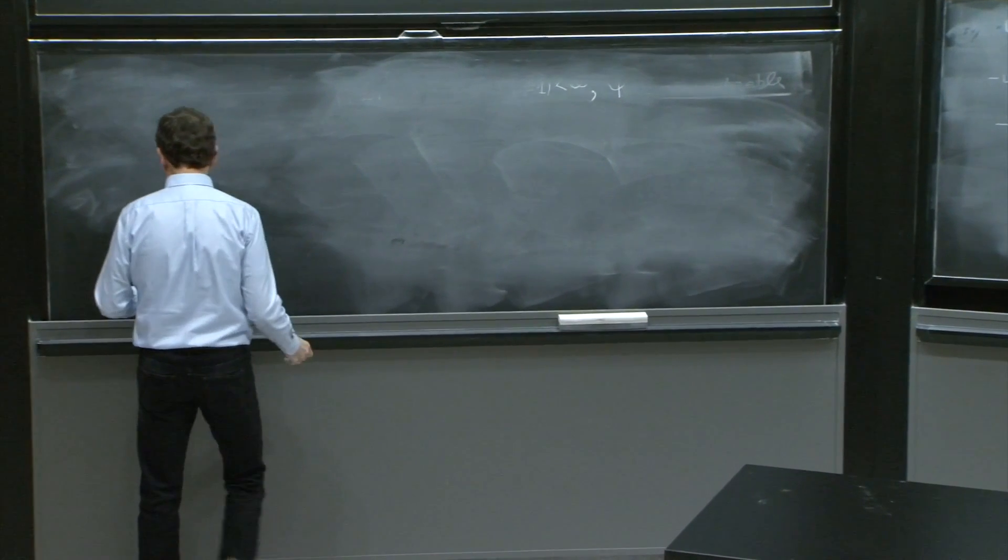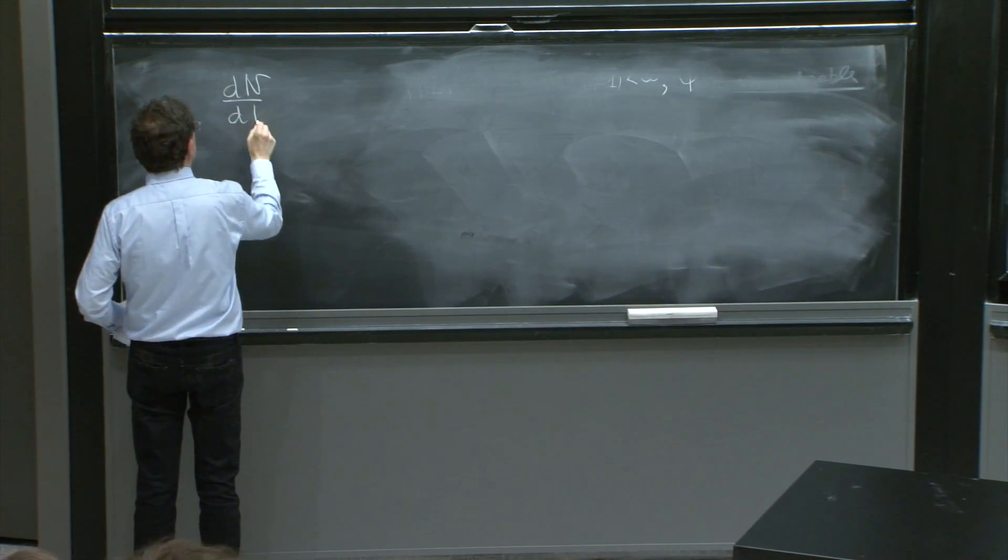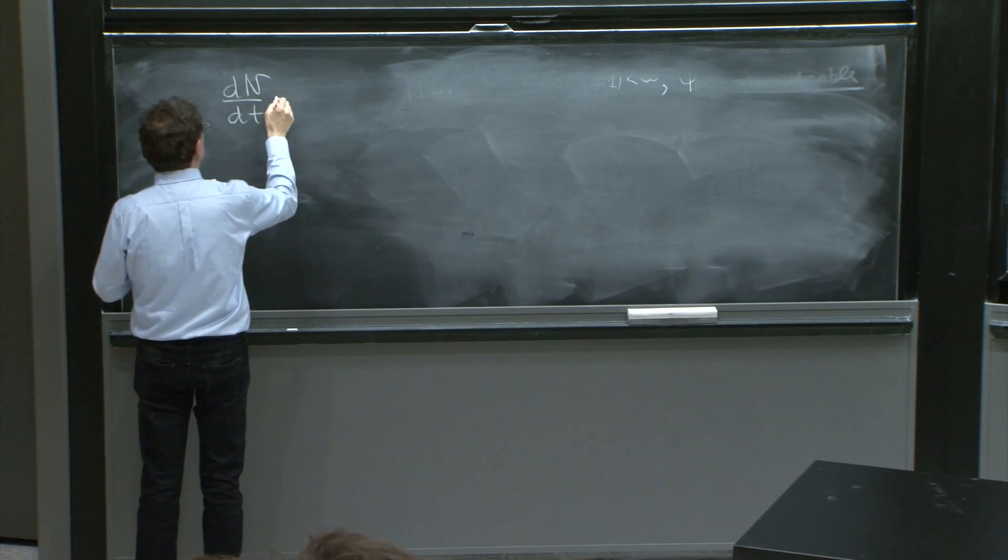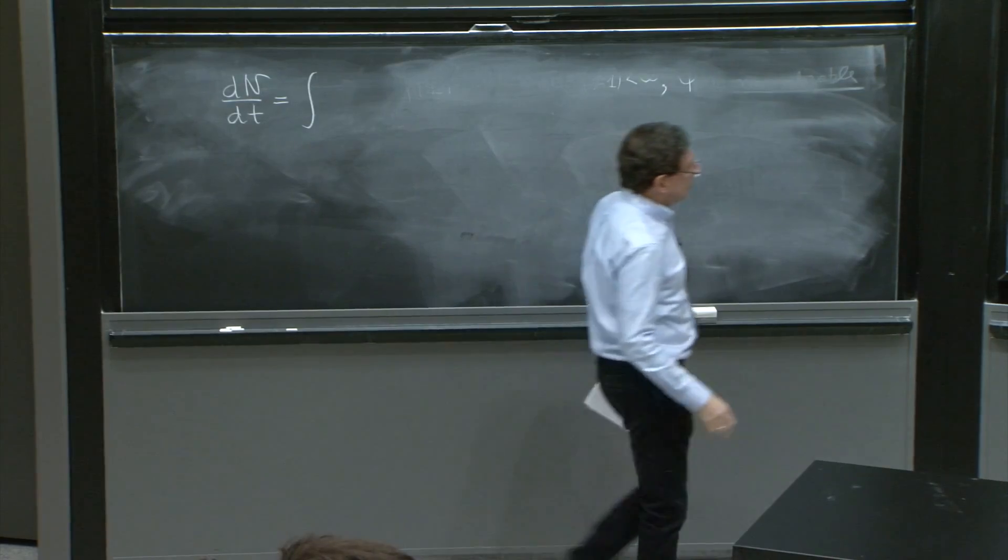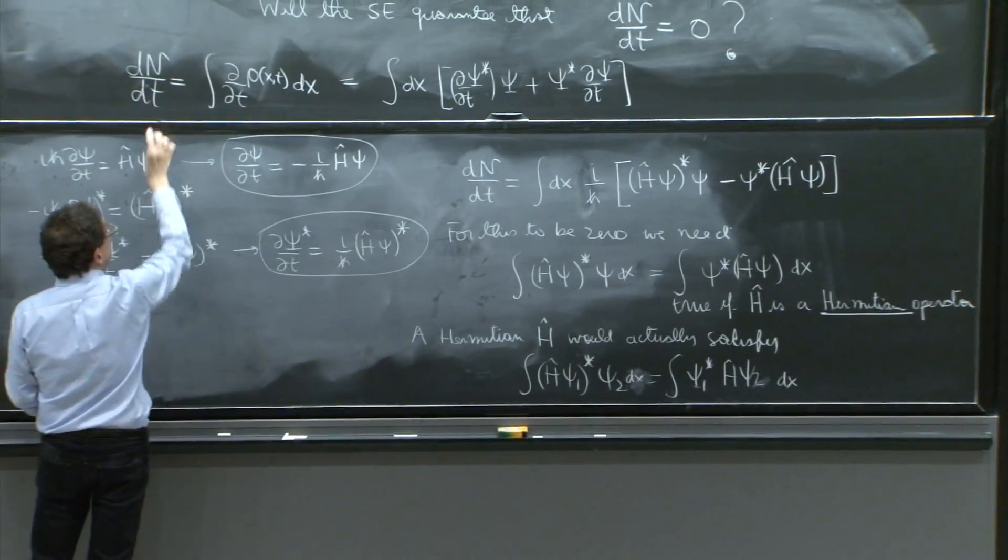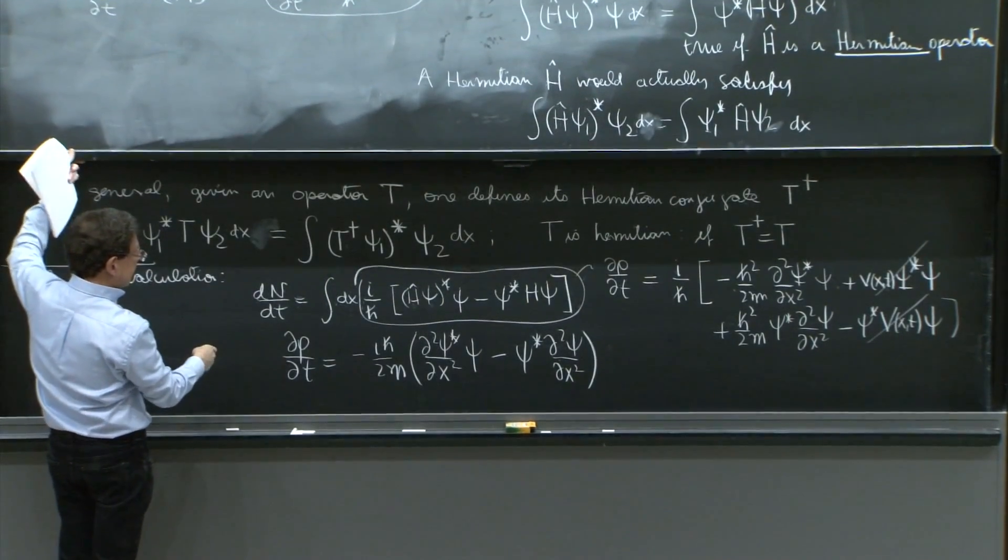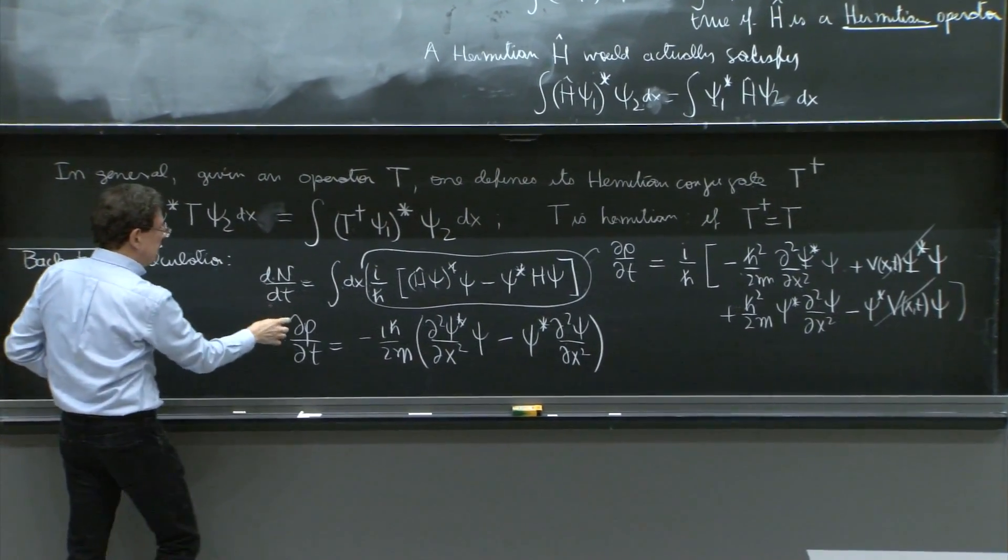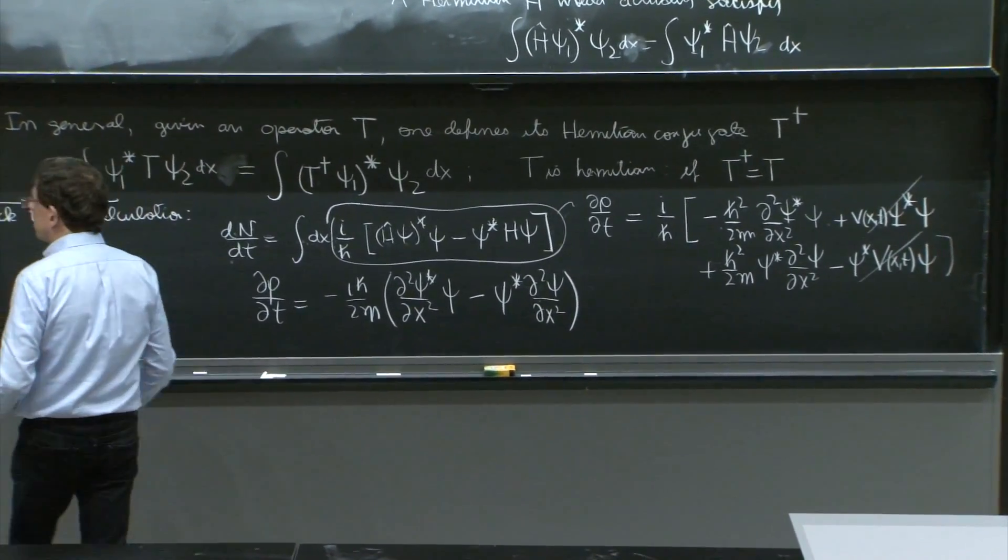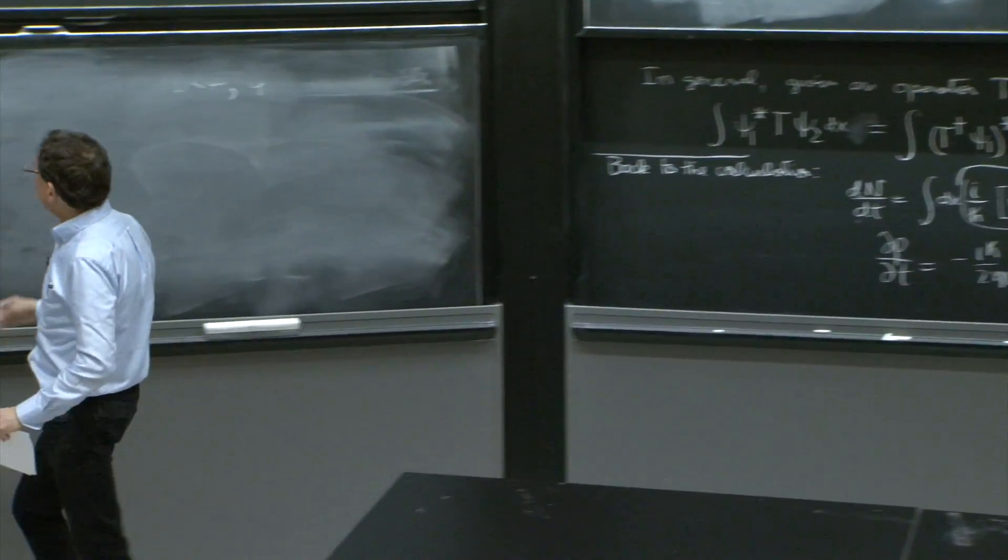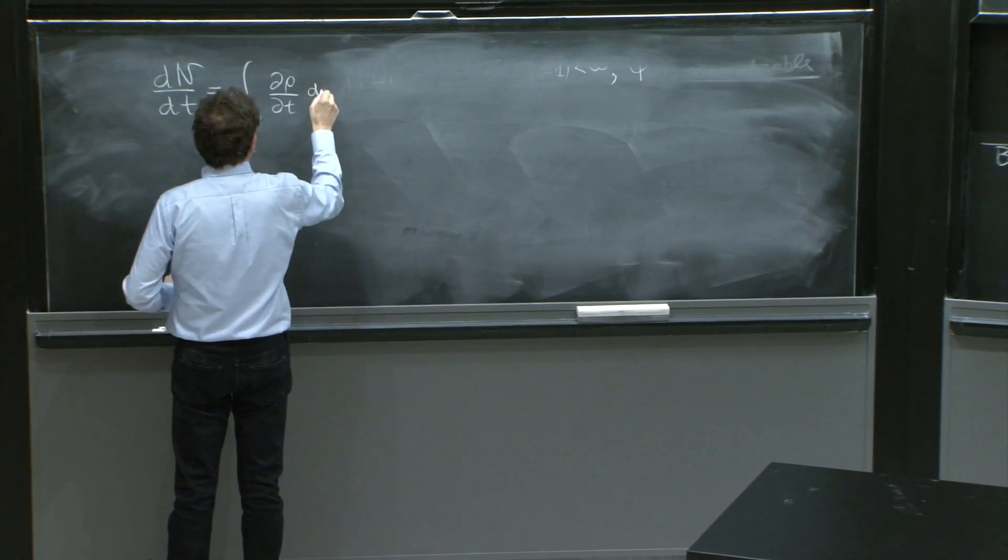So what did we have? We were doing the derivative of the integral given by n. It was over here, dn dt. We worked hard on it. And the n dt was the integral of d rho dt. So it was the integral of d rho dt dx.